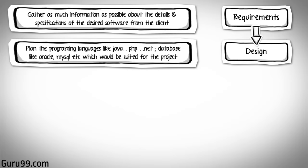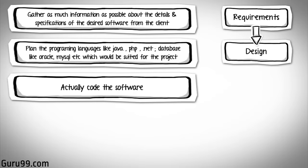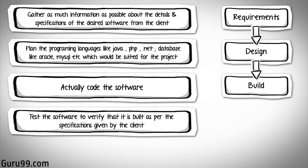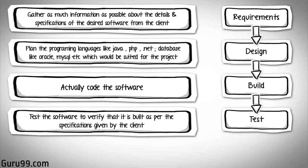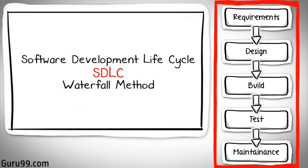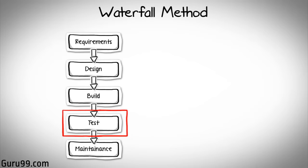Actually code the software — this is the build stage. Next you test the software to verify that it is built as per the specifications given by the client — this is the test stage. Once your software product is ready, you may do some code changes to accommodate enhancements requested by the client — this would be the maintenance stage. All these levels constitute the waterfall method of a software development lifecycle. As you may observe, testing in the model starts only after implementation is done.